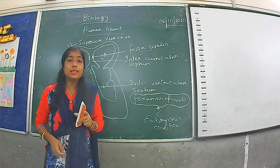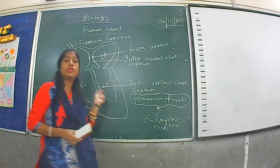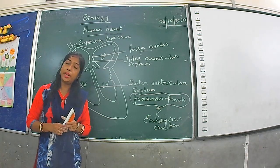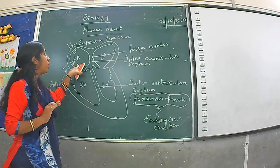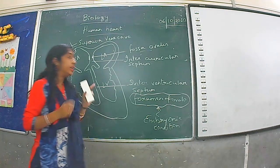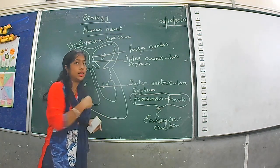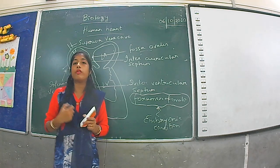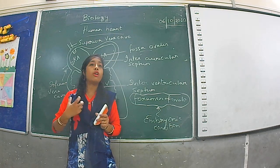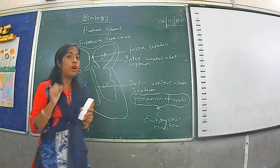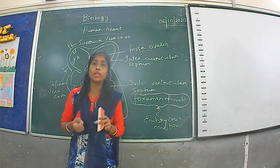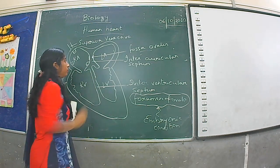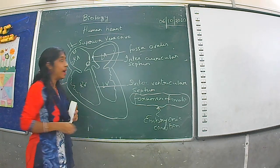The superior vena cava and inferior vena cava carry deoxygenated blood from the upper and lower parts of the body respectively into the right auricle. Additionally, when the muscles of the heart utilize oxygenated blood, the resulting deoxygenated blood is pumped into the right auricle through a vessel known as the coronary sinus.